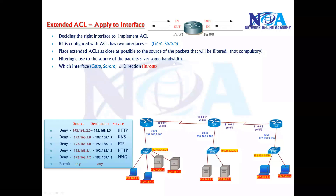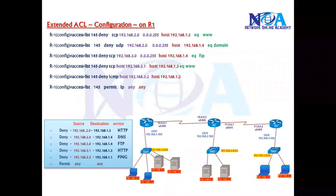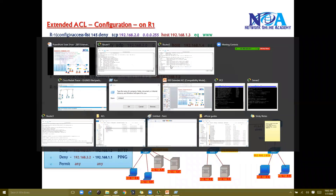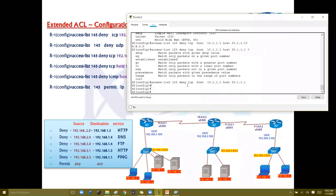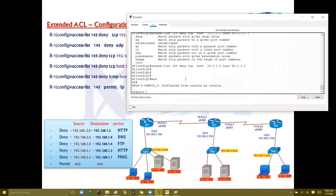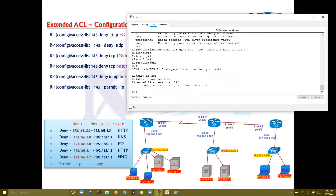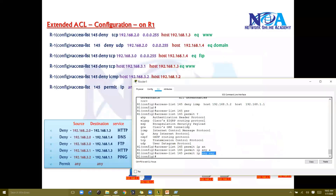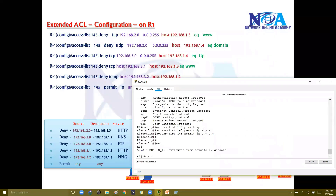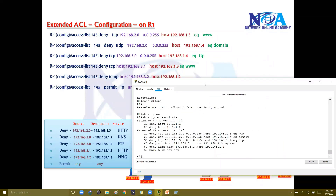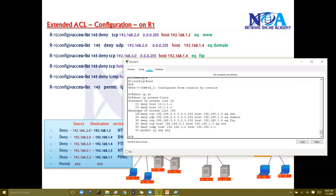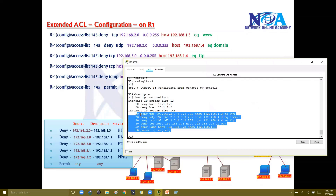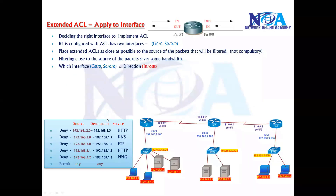In the previous section we already configured the ACL rules. If you verify the configurations on Router 1 — by running 'show IP access-list' — you can see the rules are pre-configured as per the topology, but we have not yet applied them.